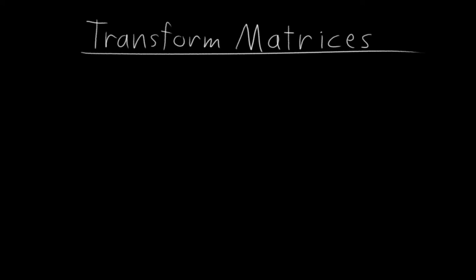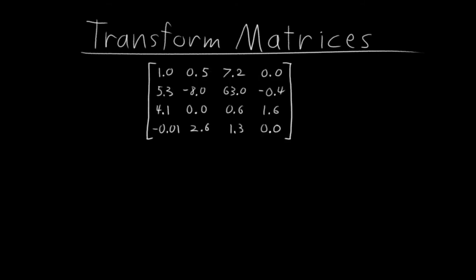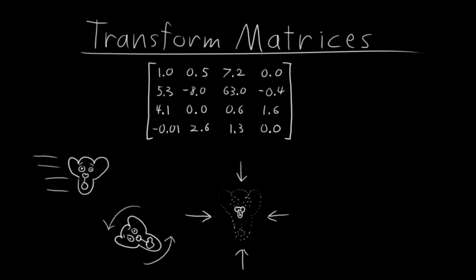So the last thing I want to touch on before we get back to actual rigging is something called transform matrices. A transform matrix is a 4x4 grid of numbers that represents everything about the location, rotation, and scale of an object.